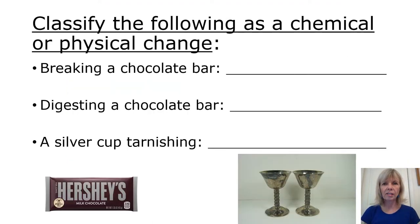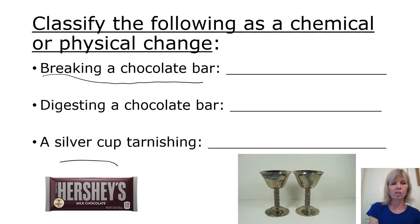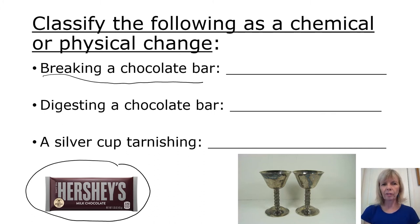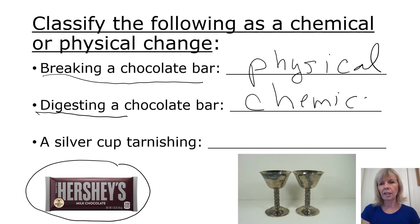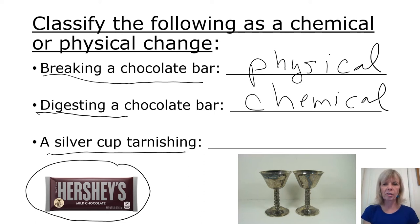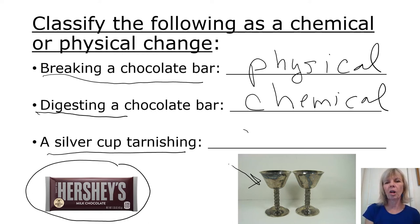I'll be asking you to classify examples as chemical or physical changes. For example, if you break a chocolate bar into smaller pieces, that's a physical change — you did not create anything new; you still have chocolate, just in smaller sizes. Digesting a chocolate bar is a chemical change, because enzymes in your saliva react with the chocolate, creating new compounds, and hydrochloric acid in your stomach continues to digest it — you end up with a new product. A silver cup tarnishing is also a chemical change — pure silver reacts with compounds in the air to form silver sulfide.